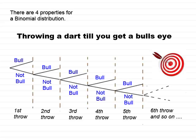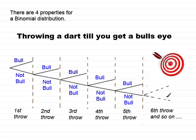The first tree diagram I'm going to show you is that of throwing a dart until you get a bullseye. You can throw the dart into the dart board — you either get a bullseye or you don't. If you get a bullseye I'm going to stop throwing the dart, so I carry on to my second throw and I either get a bullseye or I don't. Now I could keep throwing the dart at the dart board and never in theory get a bullseye, so this tree diagram would go on and on forever.